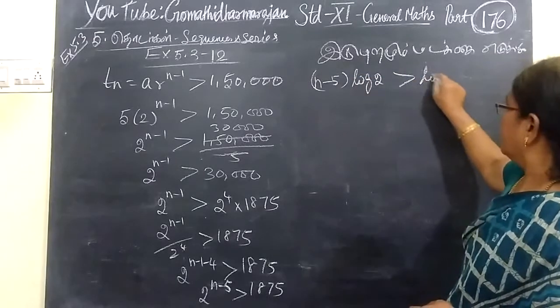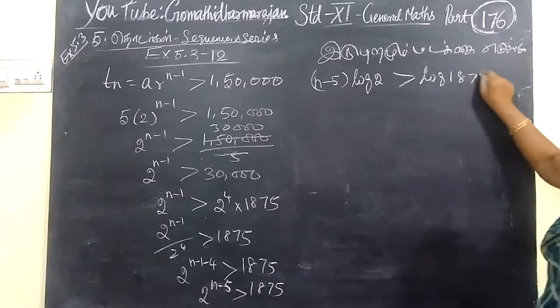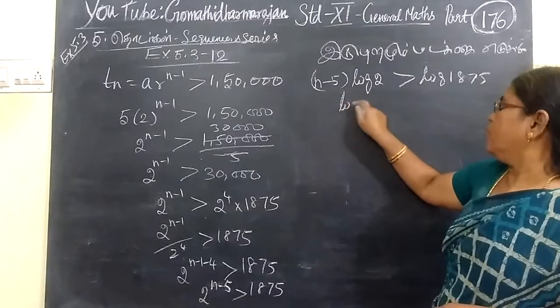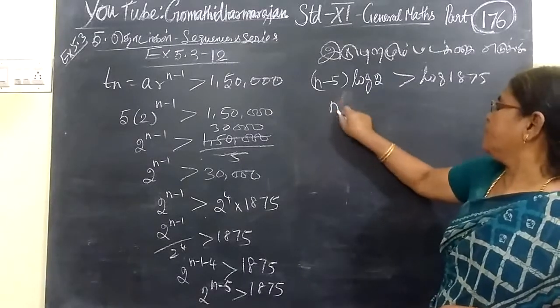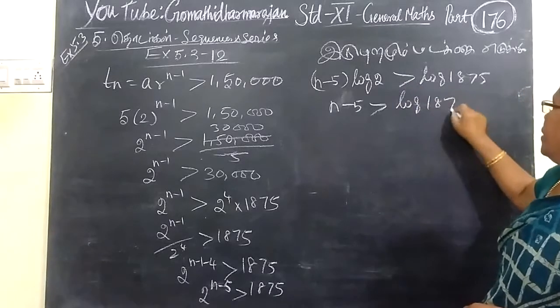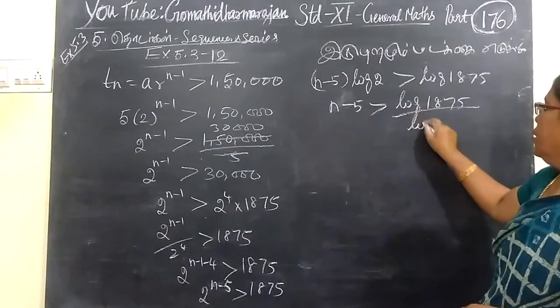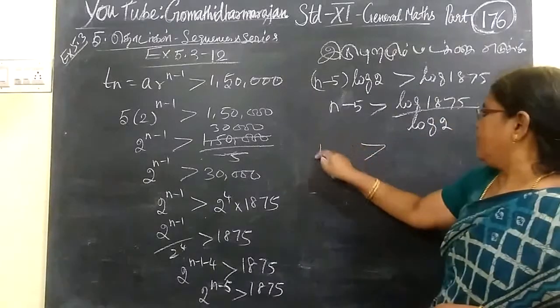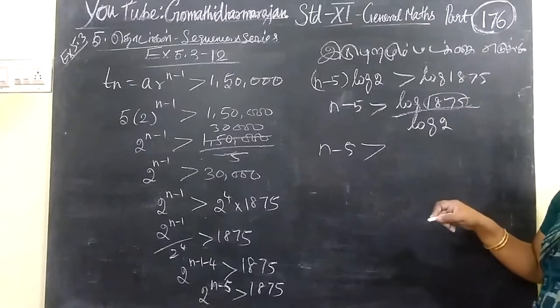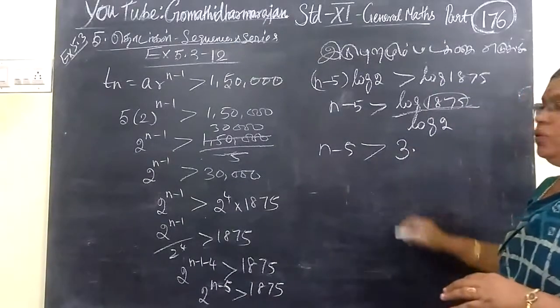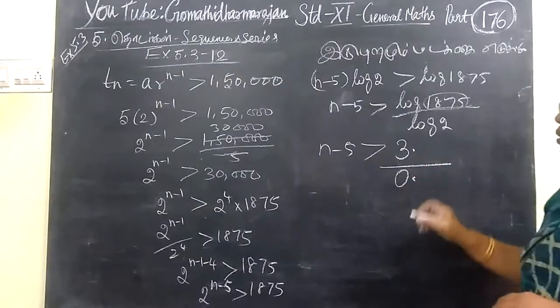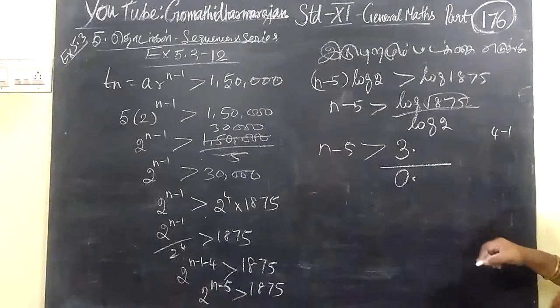Taking log on both sides: log 2 to the power n-5 greater than log 1,875. So, n-5 times log 2 greater than log 1,875 by log 2. And this is the characteristic of these numbers.